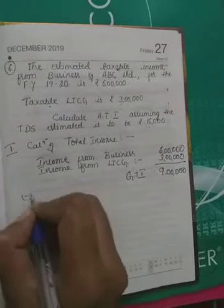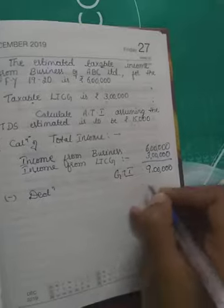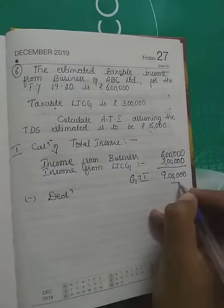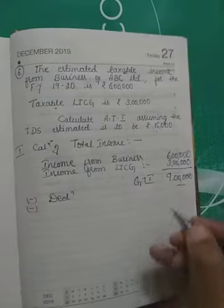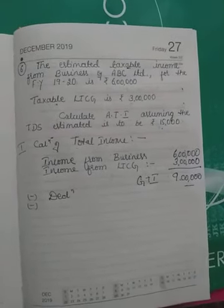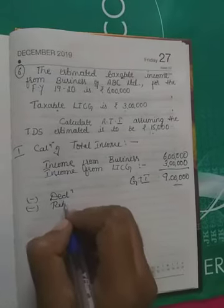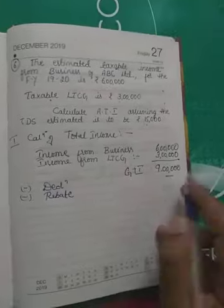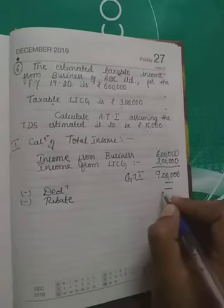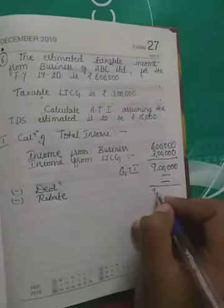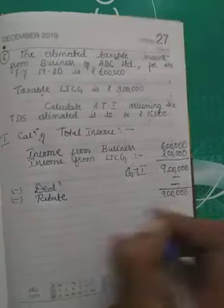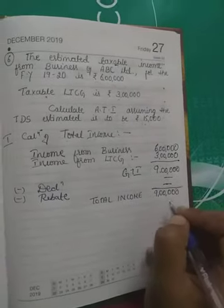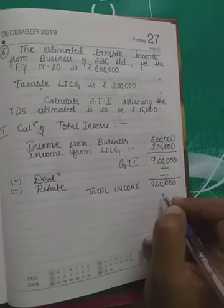Check whether there are any deductions under ATC to ATU. The problem is silent regarding deductions, so they are taken as nil. The estimated gross total income remains 9 lakhs. Rebate is applicable only if income is less than 3,50,000, so rebate is also nil here. Therefore, the total income of the company SSC is rupees 9 lakhs.